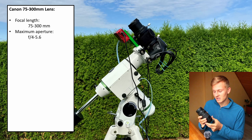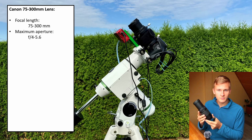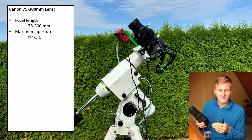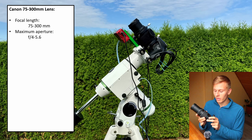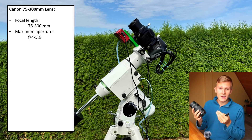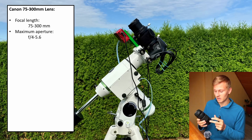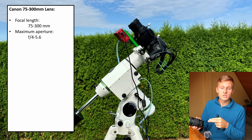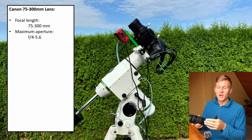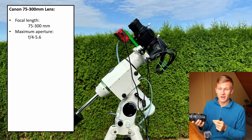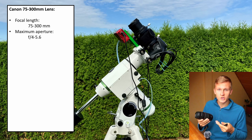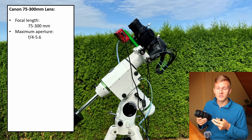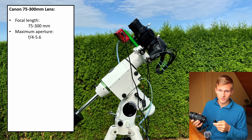The maximum aperture of this lens is between f4 and f5.6, depending on which focal length you're using. When using the maximum focal length of 300 millimeters, the maximum aperture is f5.6, and when using 75 millimeters, it's f4. That's why I usually use this lens between 75 and 135 millimeters, because in that range I can use the maximum aperture of f4 to collect as much light as possible, which is very important in deep sky astrophotography.